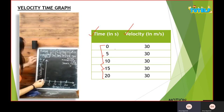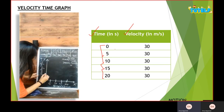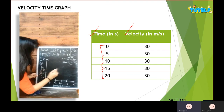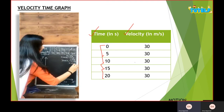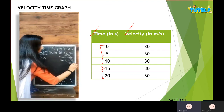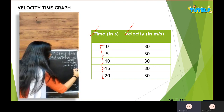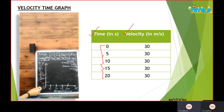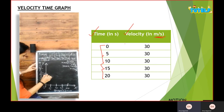For the y-axis, since the values are 0, 10, 20, 30, 40 — the difference is of 10 — so one unit represents 10, and the unit would be meters per second since velocity is in meters per second.